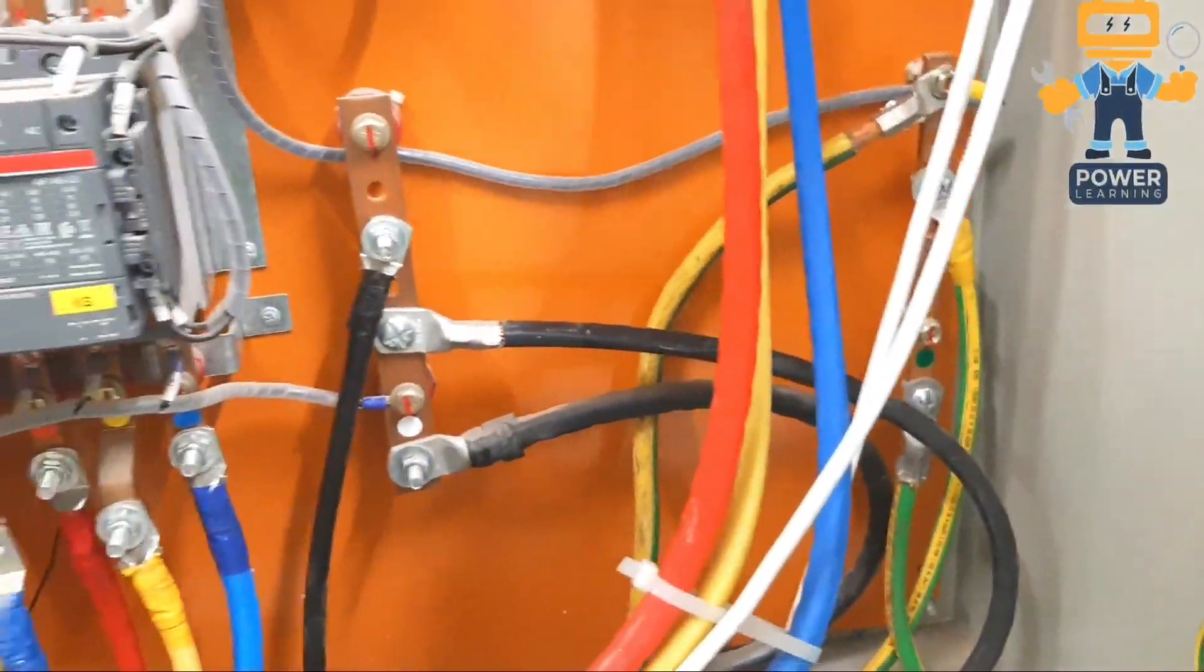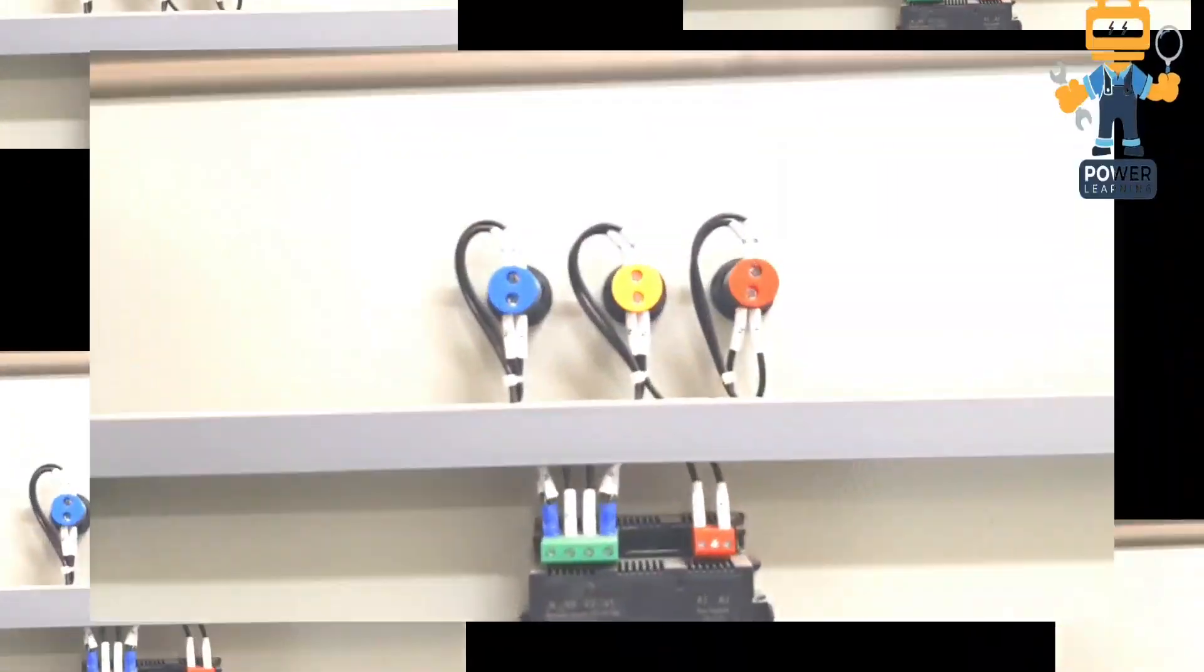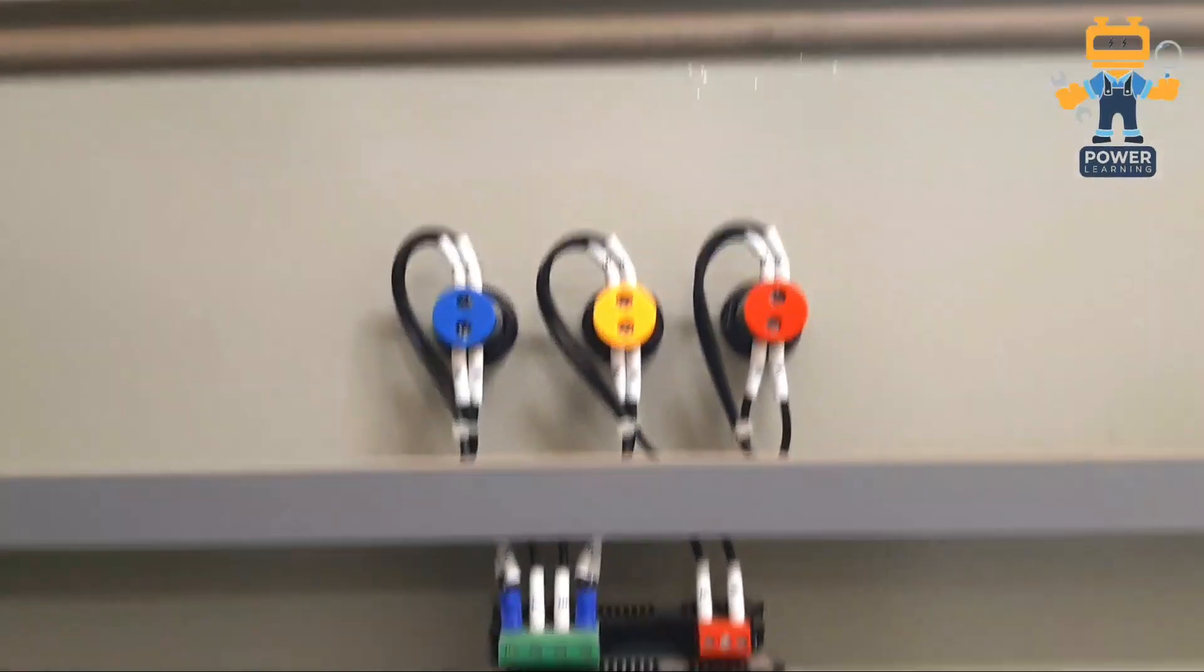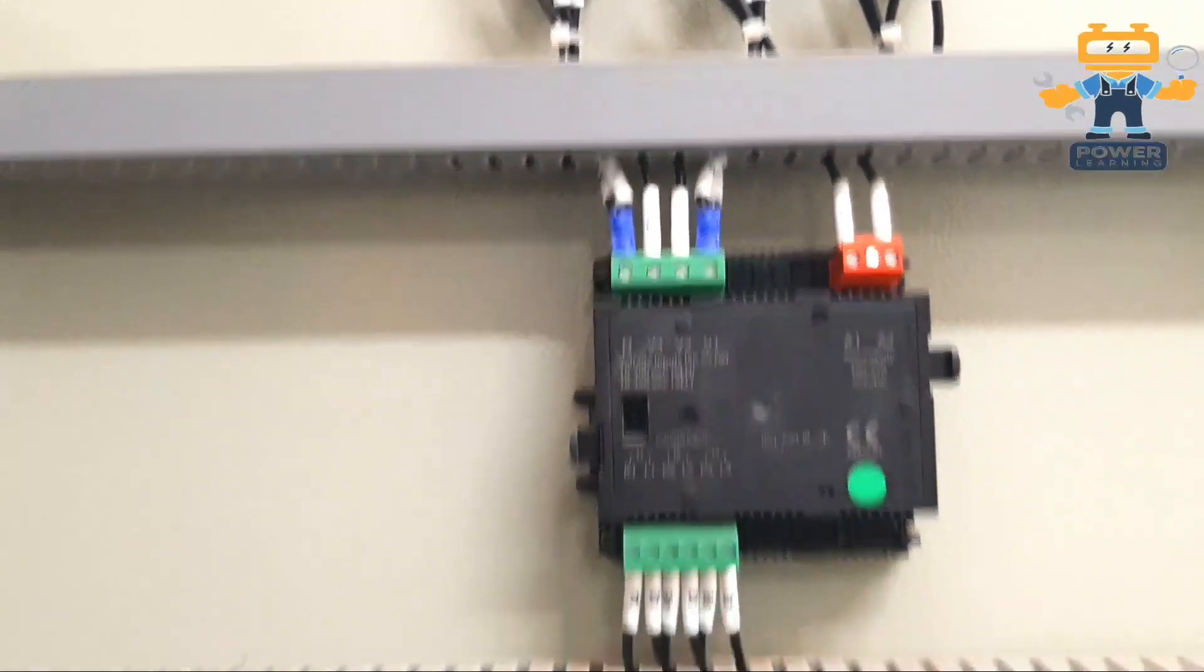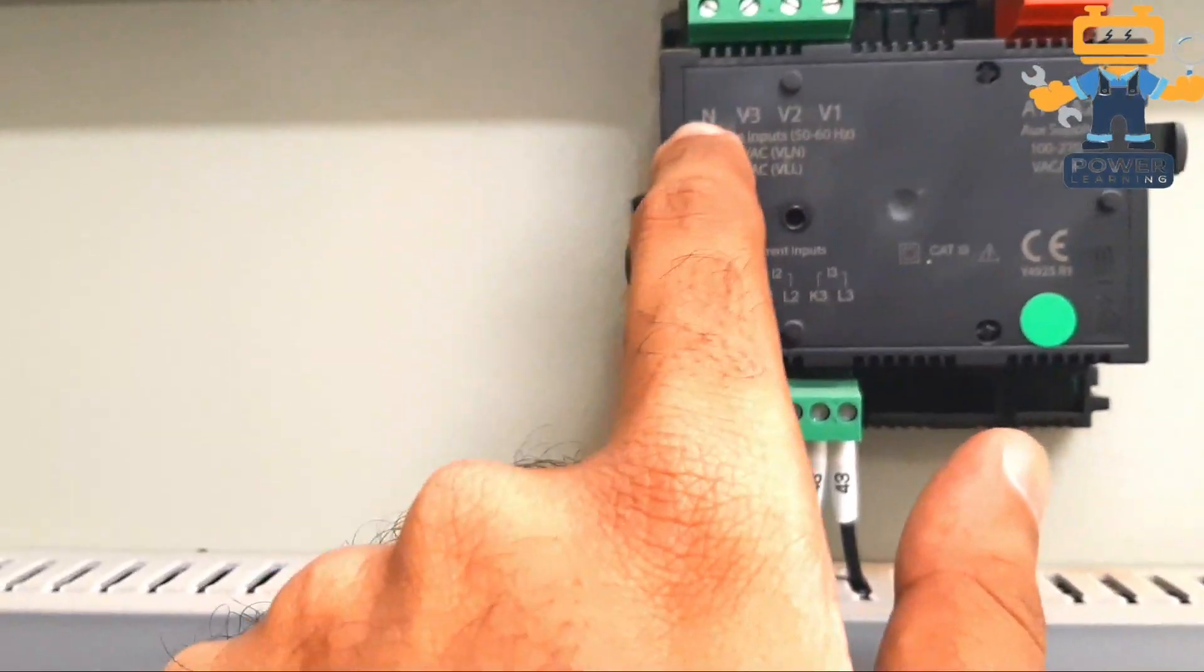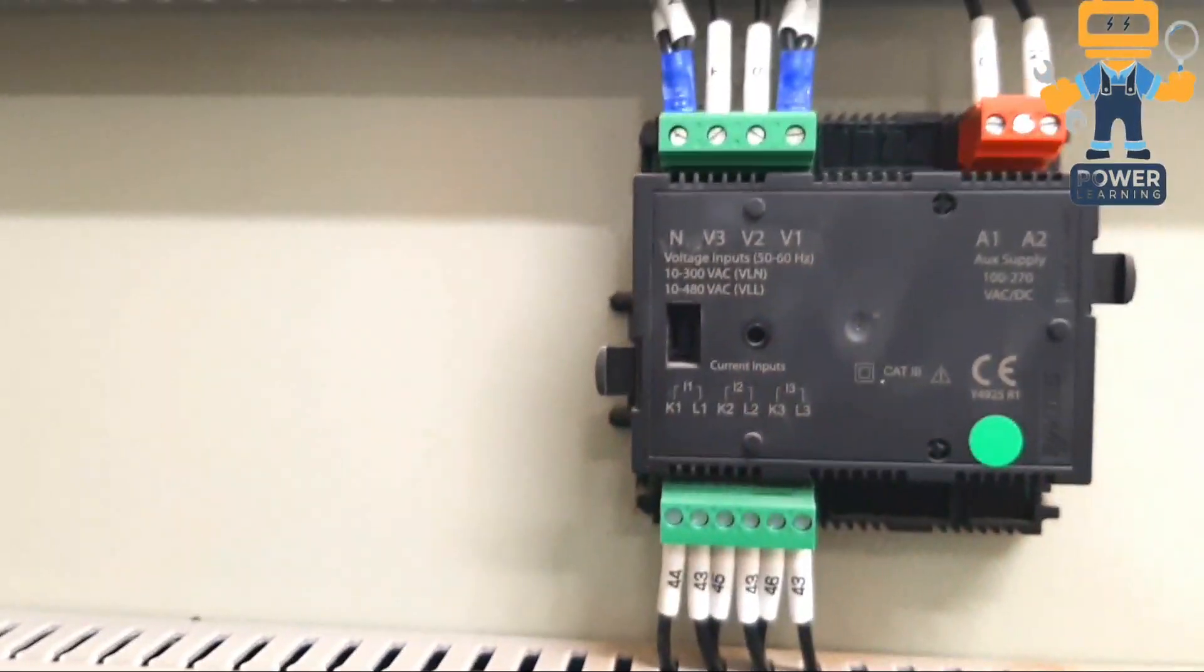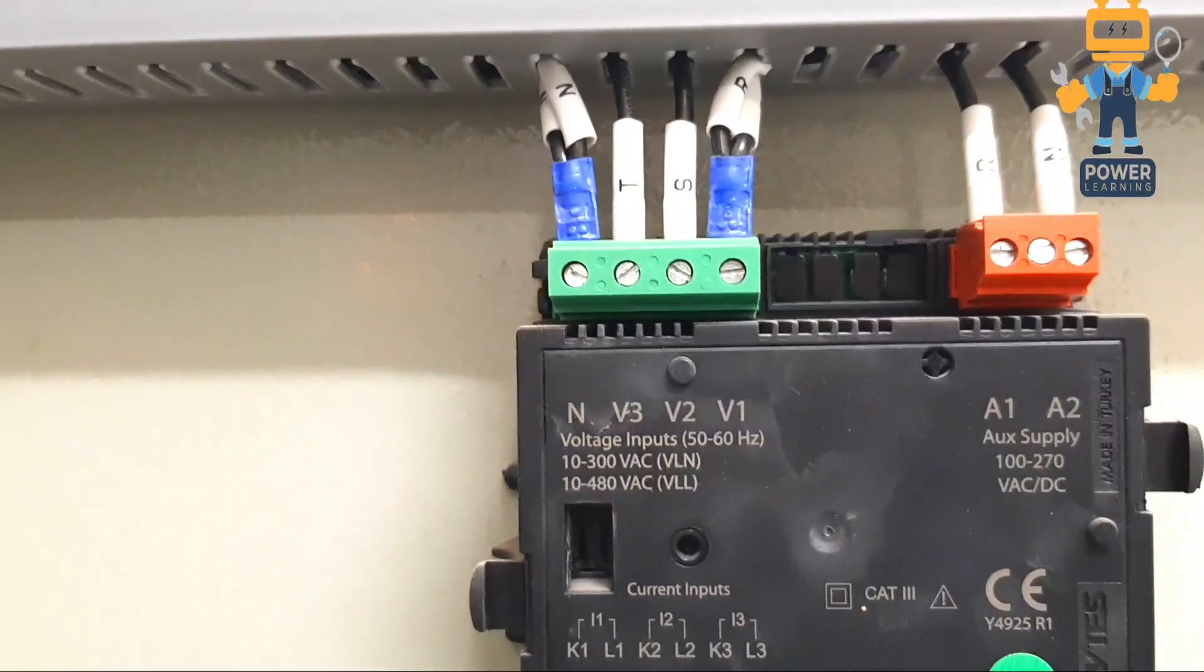Here we have our three indication lamp connections. This is our meter connection. On meter connection we have neutral, V1, V2, V3 - three phases and neutral.